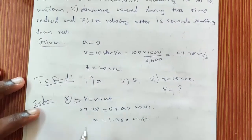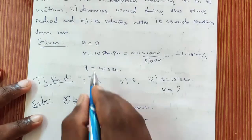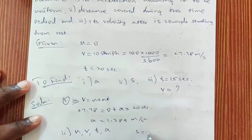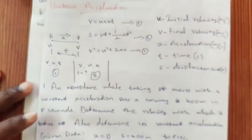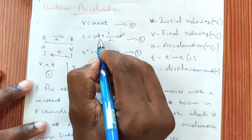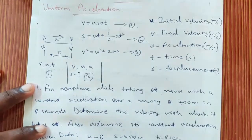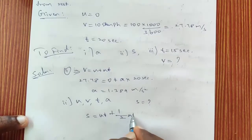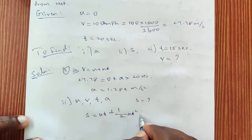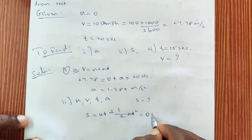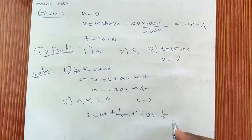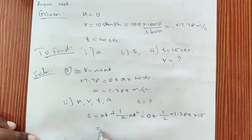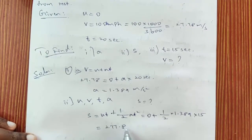For part 2, we now know u, v, t and a, and need to find s. Using equation 2: s = ut + ½at². Substituting: s = 0 + ½ × 1.389 × 20². Solving gives s = 277.8 metres.